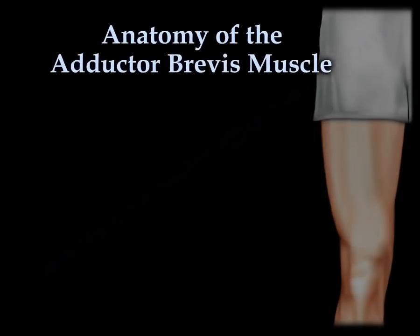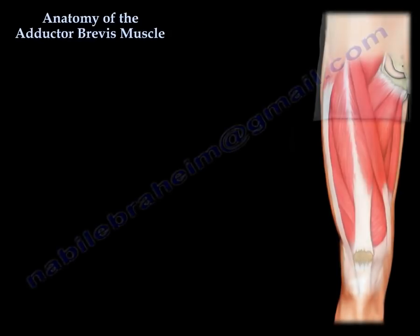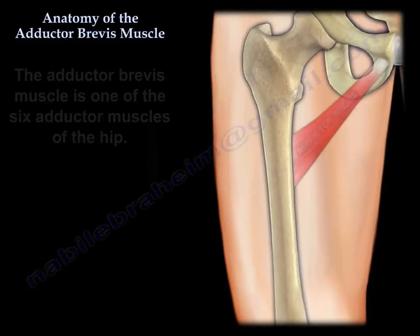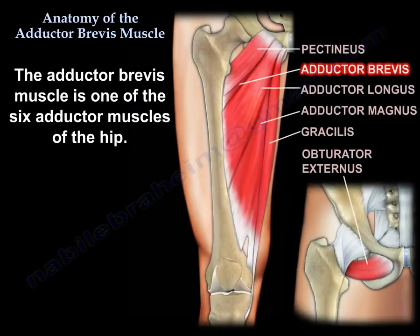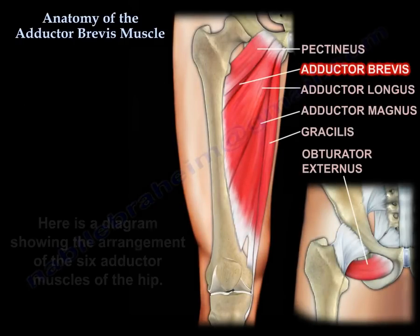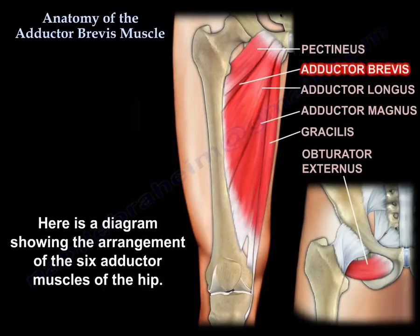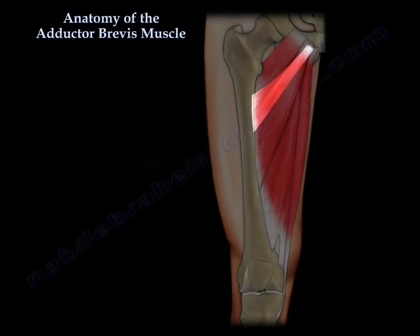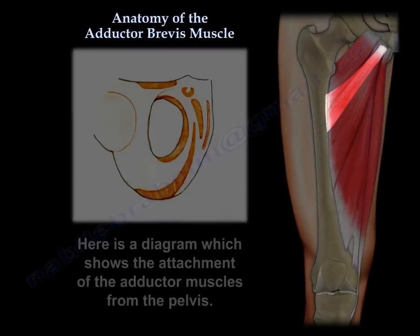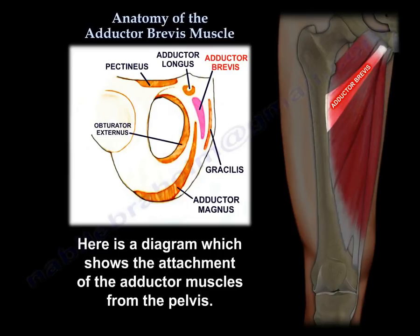Anatomy of the adductor brevis muscle. The adductor brevis muscle is one of the six adductors of the hip. Here is the arrangement of all six adductors of the hip, and a diagram that shows the attachment of the adductor muscles from the pelvis.